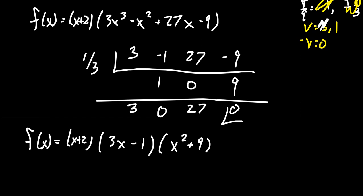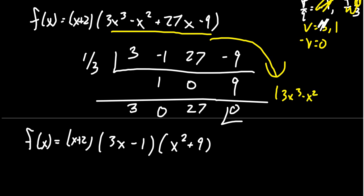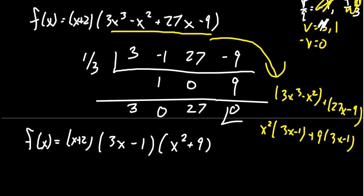Alternatively, we could have factored the cubic by grouping. Notice you could group 3x³ − x² and 27x − 9. From the first group, factor out x² to get x²(3x − 1). From the second group, factor out 9 to get 9(3x − 1). This gives the same factorization of (3x − 1)(x² + 9). If you can use elementary techniques like factoring by groups, I would recommend doing that instead of synthetic division.